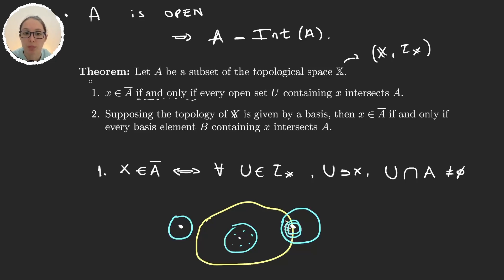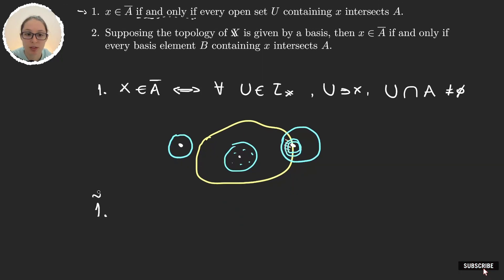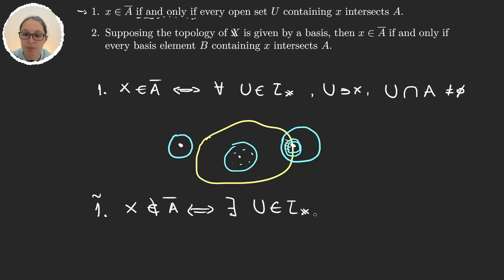I'm only going to prove property number one. To do this, we're not going to prove the statement directly, but its negation — since it is an if and only if, we can do this. The alternative version to prove is: x is not in the closure of A if and only if there exists an open set U containing x such that U ∩ A is empty.